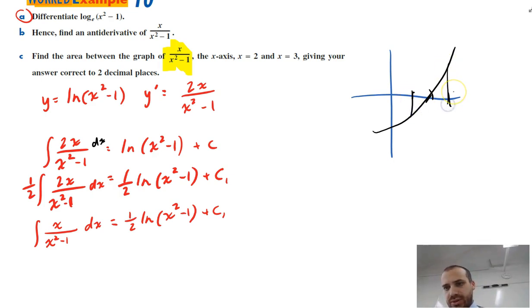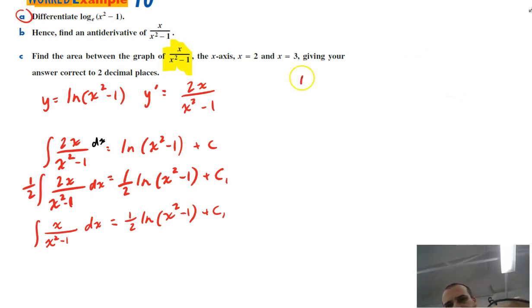So we need to check the x-intercepts because if it does have an x-intercept, if we integrate between 2 and 3, those areas might end up cancelling each other out, and we don't want that, so we need to find out where the x-intercepts are. So find the x-intercept, let y equal 0.